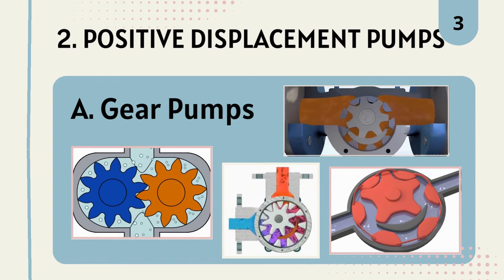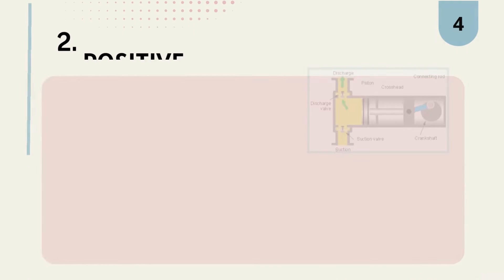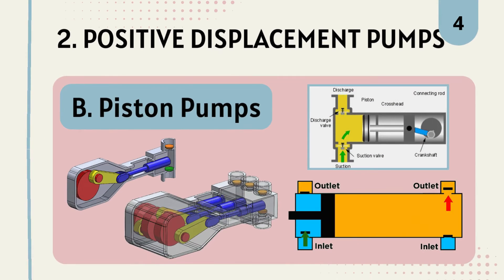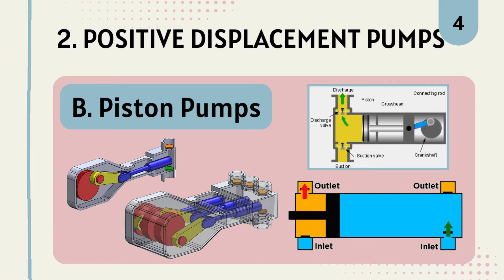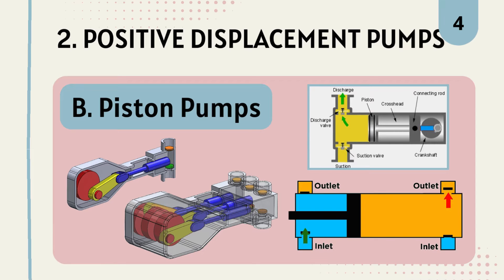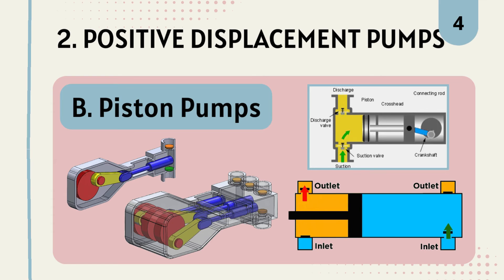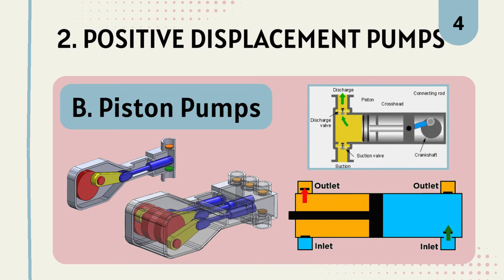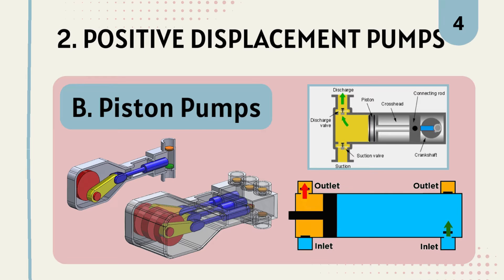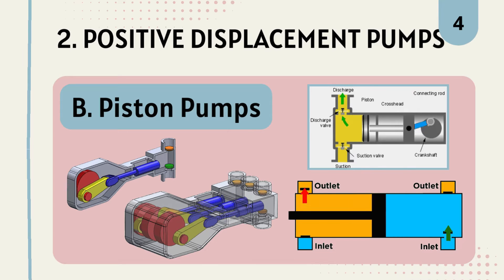The second type of positive displacement pump is the piston pump. Piston pumps operate by pushing and pulling a piston to displace the fluid. They are suitable for high-pressure applications and can handle a wide range of fluids, including corrosive chemicals.